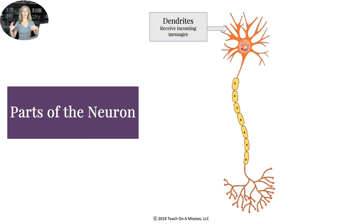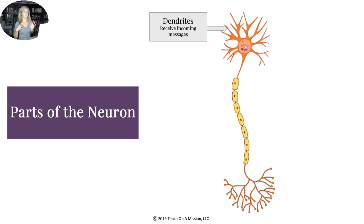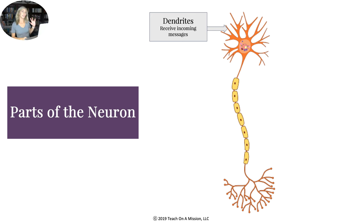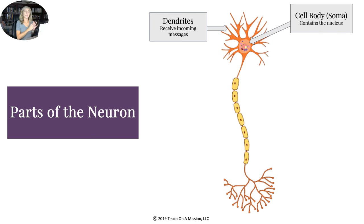Let's go through the parts of the neuron using the neuron dance. Take your left hand and bring it close to your body, almost as if your hand is attached. Then put your right arm out as far as you can and do jazz fingers. These extended fingers are your dendrites.